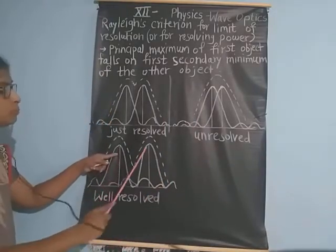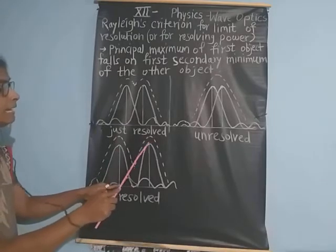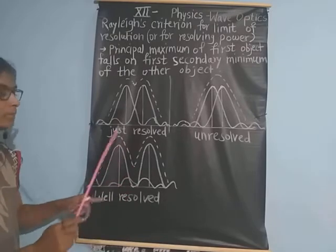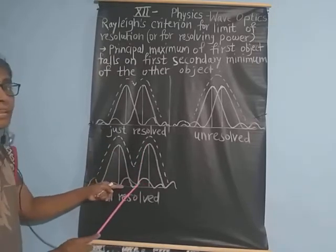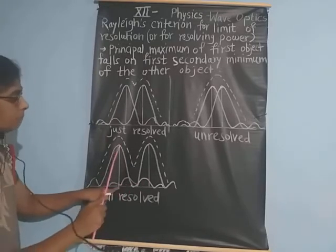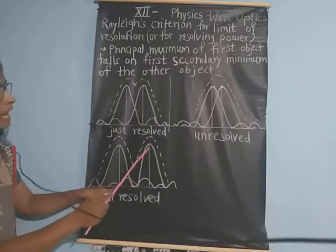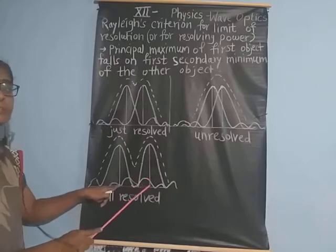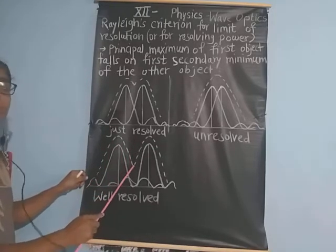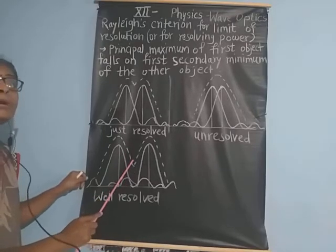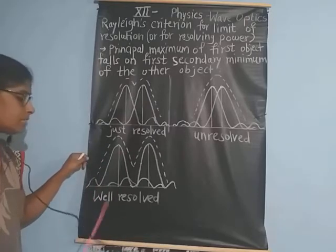If the distance between the two principal maxima is greater than the distance between the central maximum of the first object and the first secondary minimum of the second object, we can see two separate central maxima clearly. This is the well-resolved pattern.